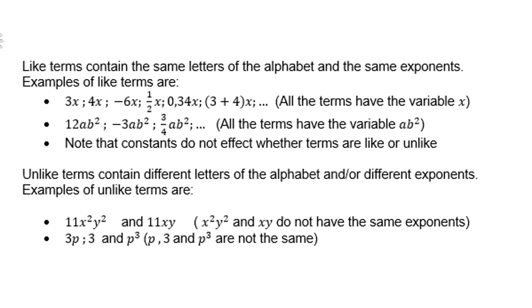Unlike terms contain different letters of the alphabet and/or different exponents. Examples of unlike terms are 11x²y² and 11xy. Now don't say because they both got 11 they're alike. No, the letters are different. 3p and 3, and p³, they are not the same. So therefore, they are unlike terms.